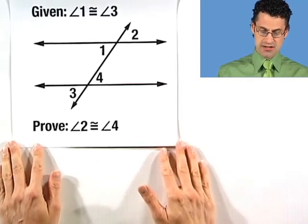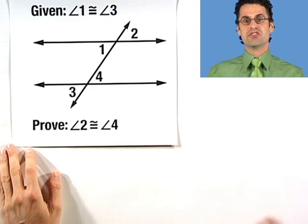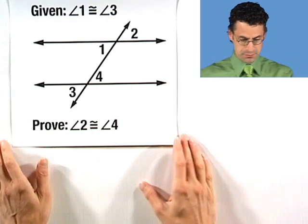So here's the result that I want us to take a look at, and then I'm going to show you a paragraph proof, and then we're going to convert that into a traditional two-column proof. So let's take a look.